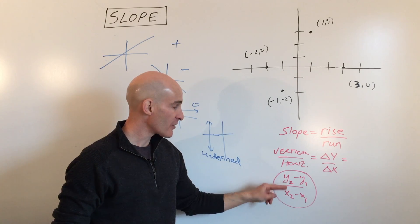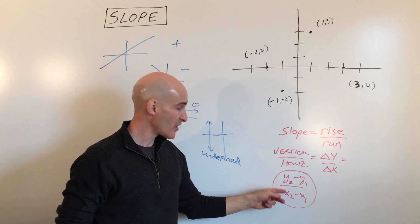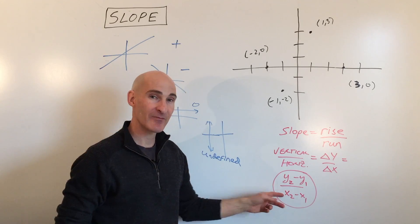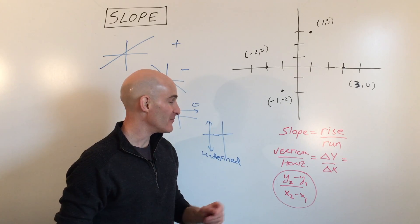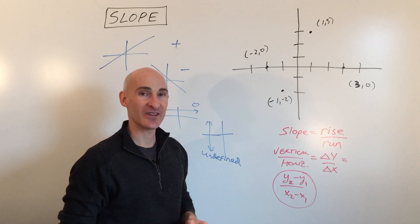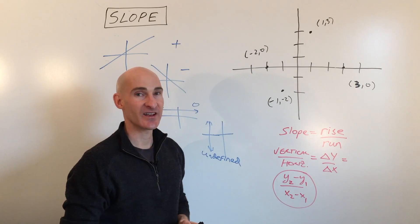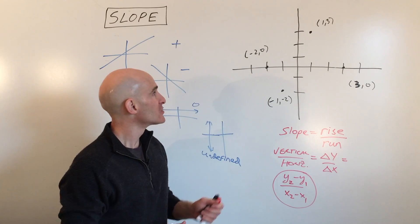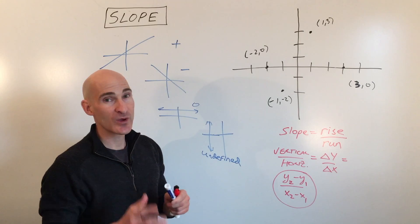Sometimes students make a mistake and put the x's in the numerator and the y's in the denominator — be careful not to do that. The y's control the rise, so they go in the numerator, and the x's control the run, so they go in the denominator.